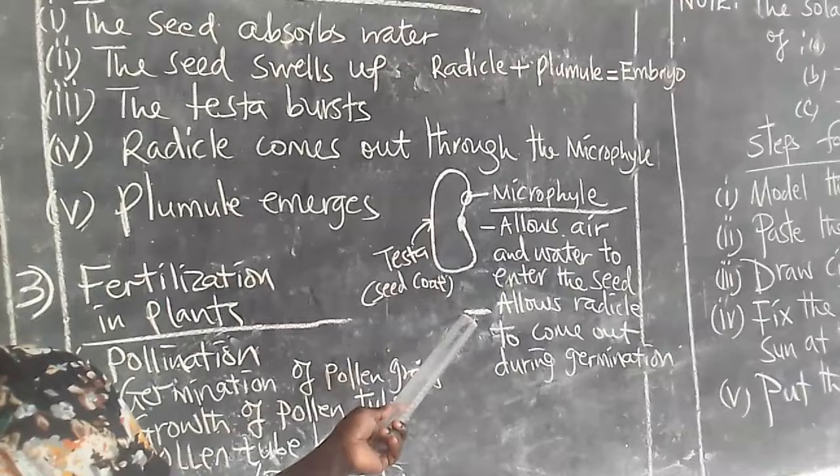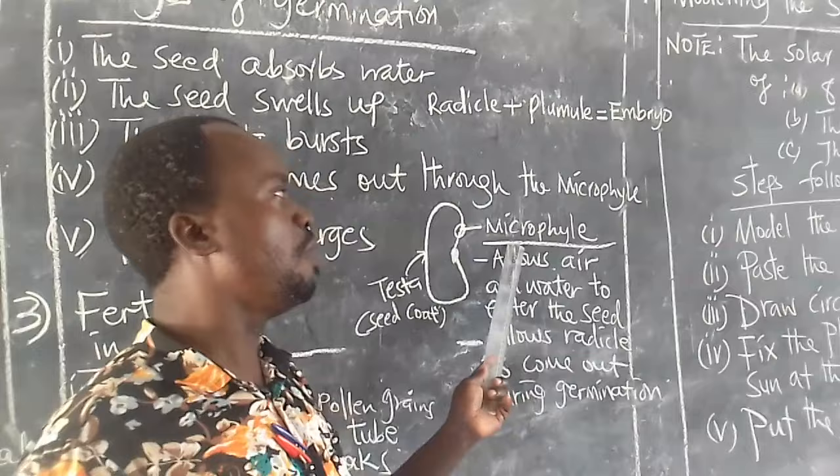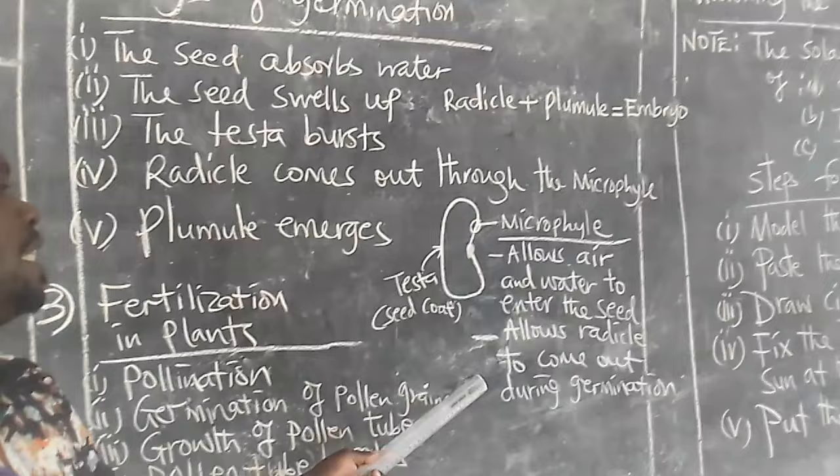The second function of the micropyle: it allows the radicle to come out during germination. I'm talking about the radicle, not the plumule. Functions of micropyle, I repeat: allows air and water to enter the seed; number two, allows radicle to come out during germination.